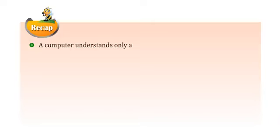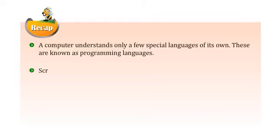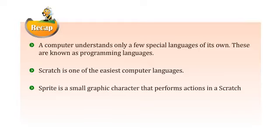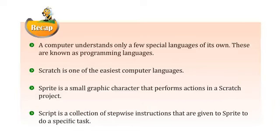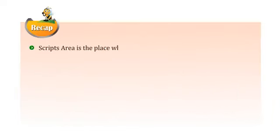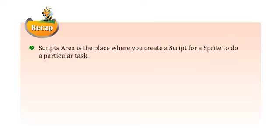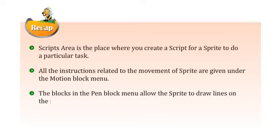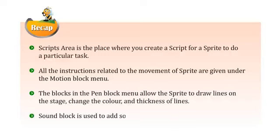Let's take a recap of this chapter. A computer understands only a few special languages of its own, known as programming languages, and Scratch is one of the easiest. A Sprite is a small graphic character that performs actions in a Scratch project. A Script is a collection of step-wise instructions given to a sprite to do a specific task, created in the Scripts Area. The Motion Block menu handles sprite movement, the Pen Block menu allows the sprite to draw lines and change their color and thickness, and the Sound Block is used to add sound in the project.